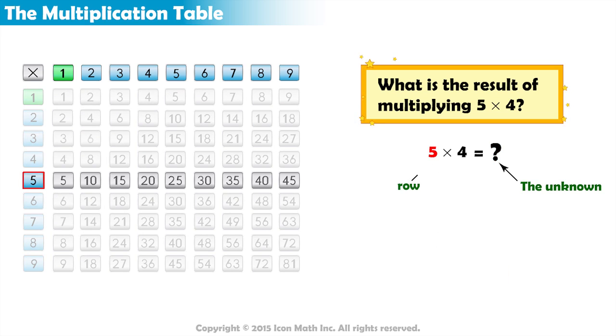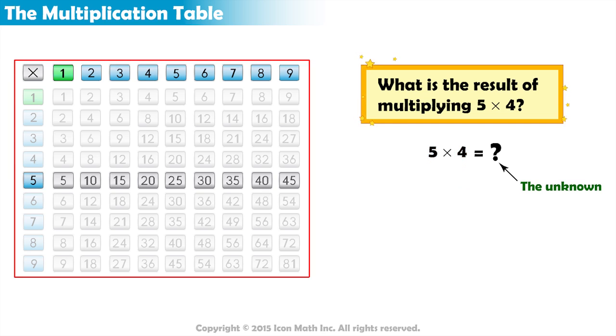5 represents the row number and 4 represents the column number. What is the value of the element in row 5, column 4?